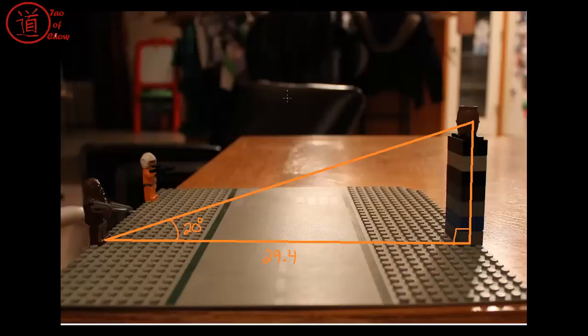So what we can do then is we want to find out how tall this is, so h, the height. What we can find out is that we can use tan again, so we can say that tan theta is equal to opposite over adjacent. And we can say that tan of 20 degrees is equal to the opposite, which is h, over 29.4.